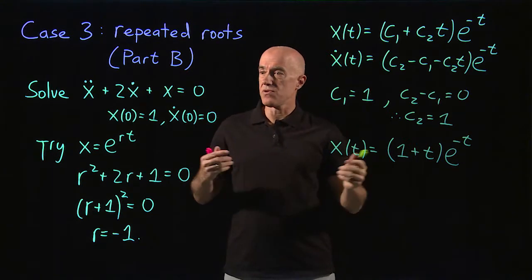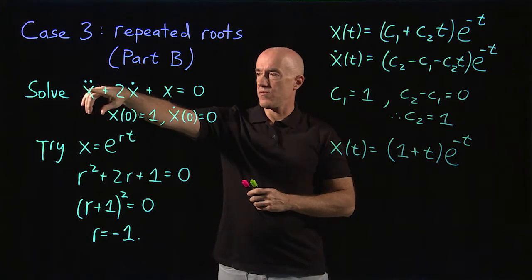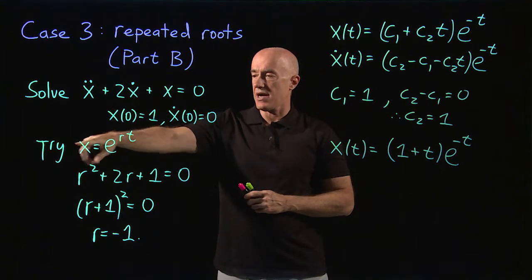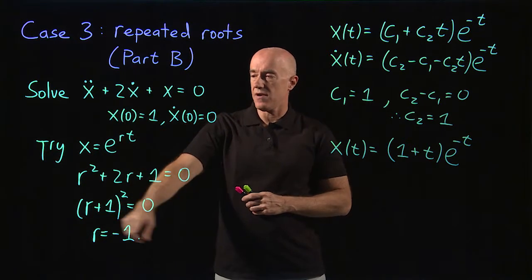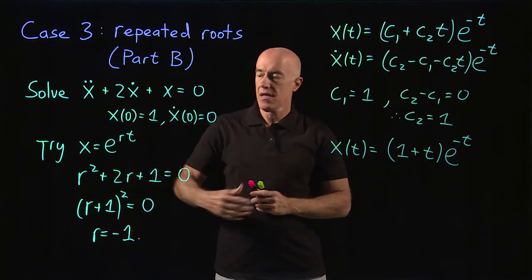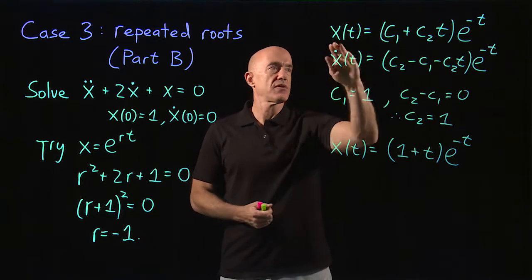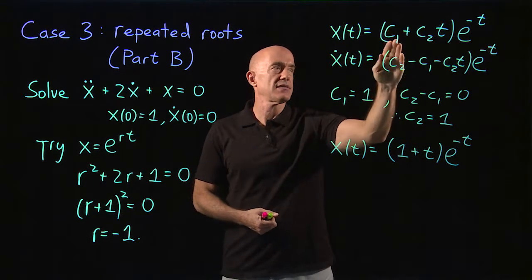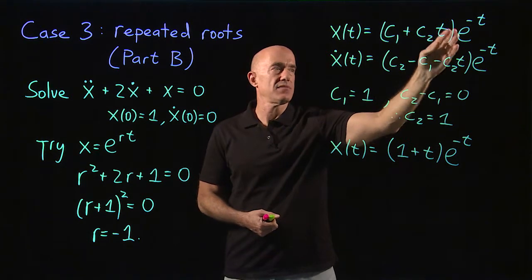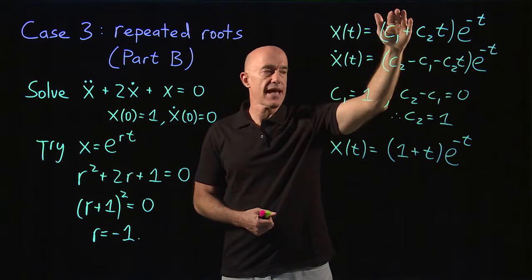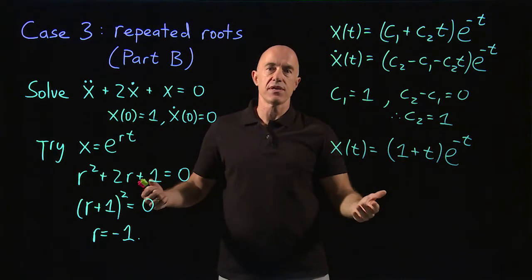Let me review the solution procedure for this case. We have the differential equation, we try our usual ansatz x equals e to the rt. We obtain only one root of the characteristic equation. That tells us the missing solution is t times e to the rt. So we write the general solution as a constant times e to the minus t plus another constant times t times e to the minus t. We then satisfy the initial conditions and get the solution to the differential equation.